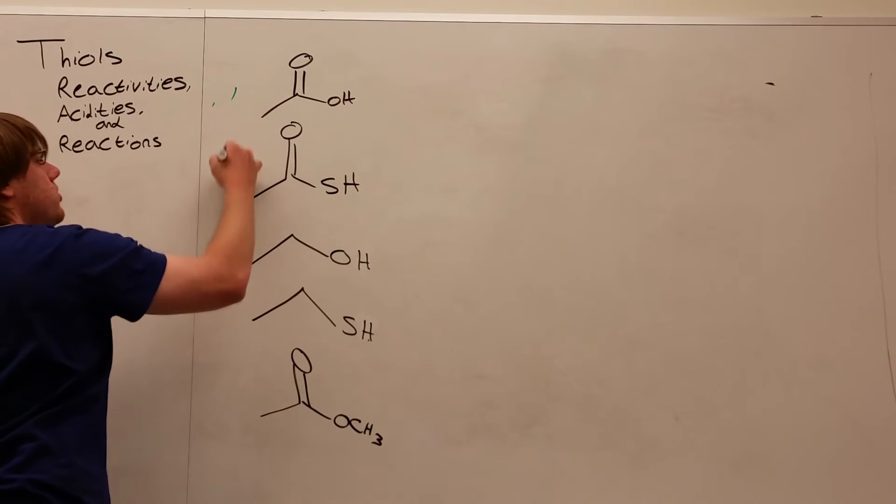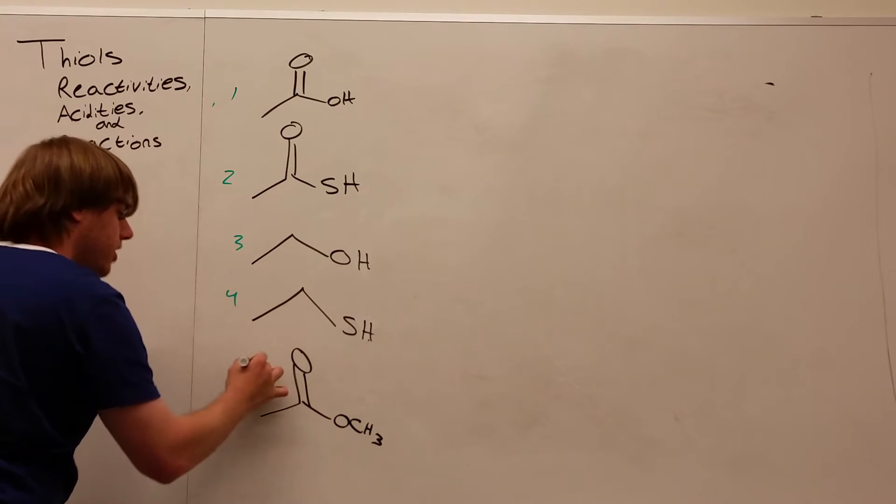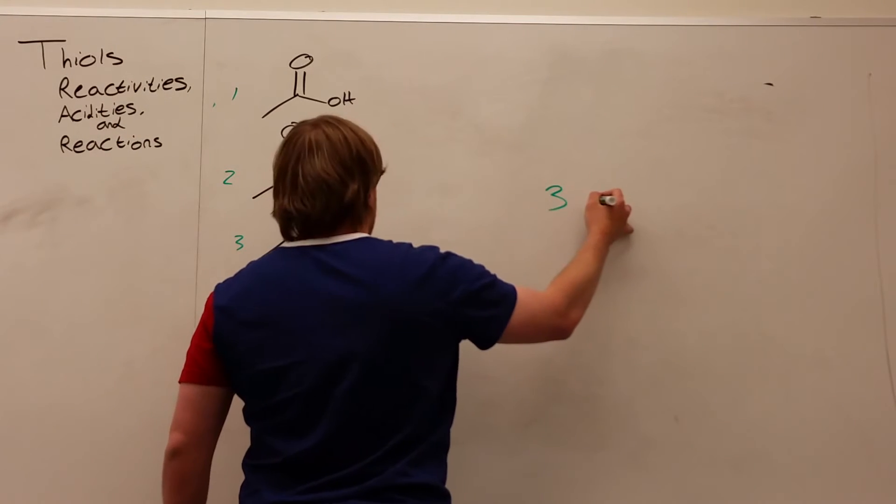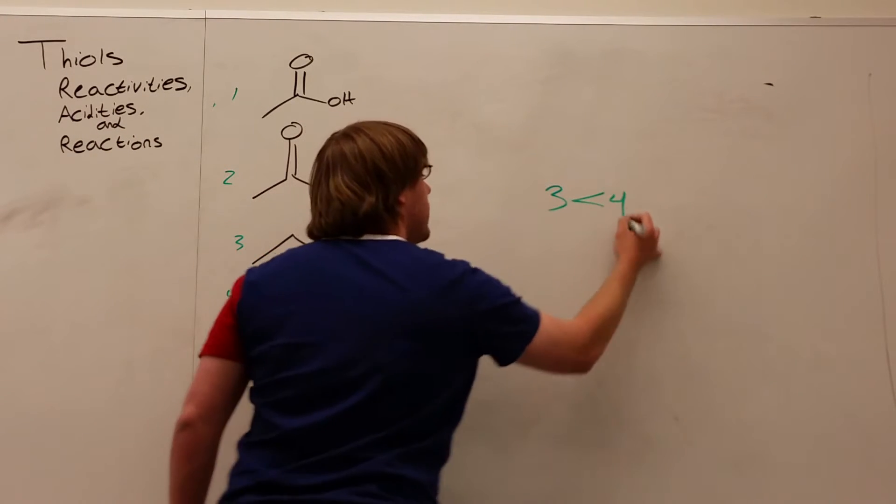Let's call these 1, 2, 3, 4, and 5. And for now, what we know is that, at the very least, 4 is more acidic than 3.